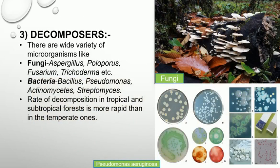Then the decomposers. Decomposition is an extremely oxygen-requiring process. Decomposers convert the complex organic compounds of debris into inorganic substances such as carbon dioxide, water and nutrients. The debris is the remains of dead plants such as leaves, bark, flower, and also the dead remains of animals including their fecal matter. The steps involved in decomposition are fragmentation, catabolism and humification. The process requires microorganisms such as fungi and bacteria. Examples of fungi: Aspergillus, Polyporus, Fusarium, Trichoderma. Examples of bacteria: Bacillus, Pseudomonas, Actinomycetes, Streptomycin.